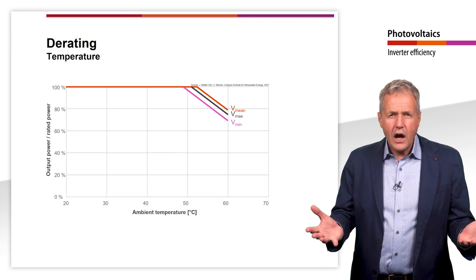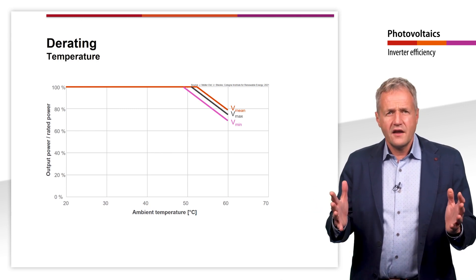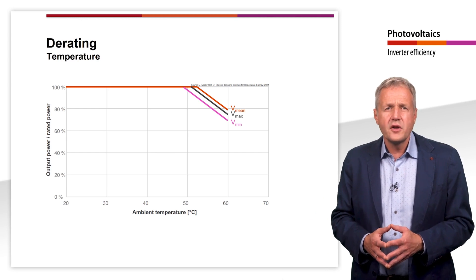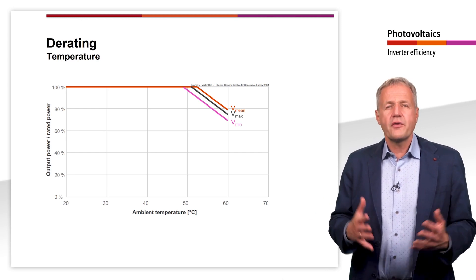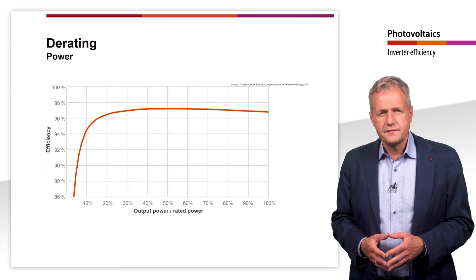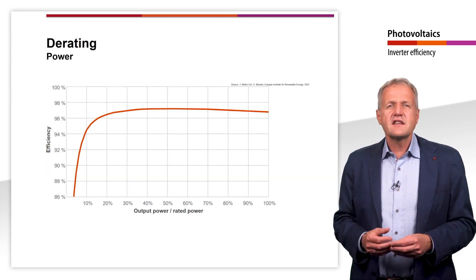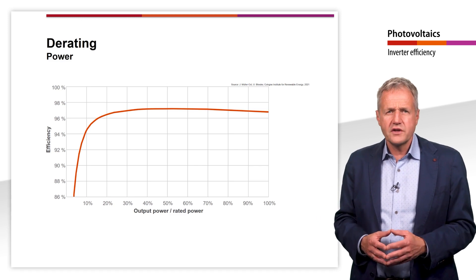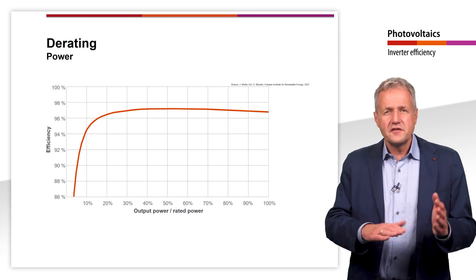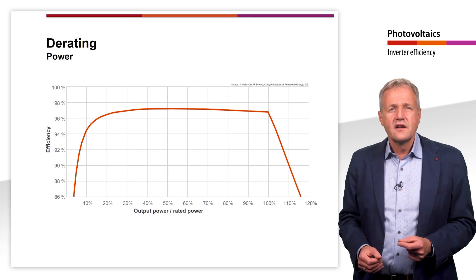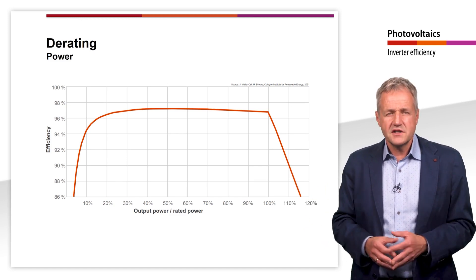Reliable housing cooling and a mounting location that is as evenly cool as possible are therefore important for the operation of an inverter. The inverter's derating is based on the temperature of the components, but it can also be observed in the efficiency curve, provided that the higher power is applied long enough to cause critical heating.